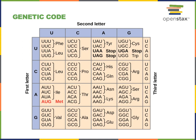There is also a start codon and a stop codon. The start codon AUG codes for the first amino acid incorporated during translation, methionine. The stop codons UAA, UAG, and UGA do not code for any amino acid. When the ribosome reaches a stop codon, translation is terminated and the polypeptide is released from the ribosome.